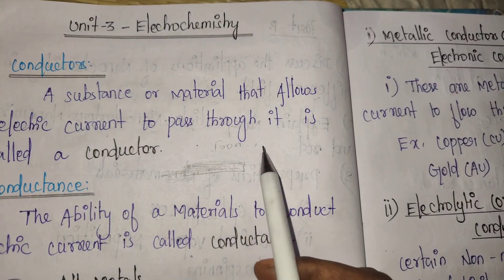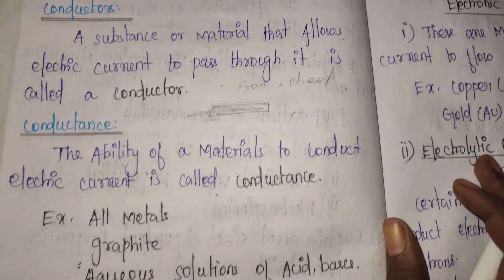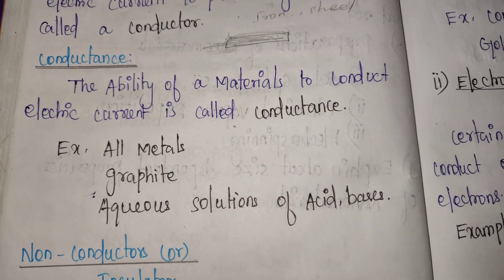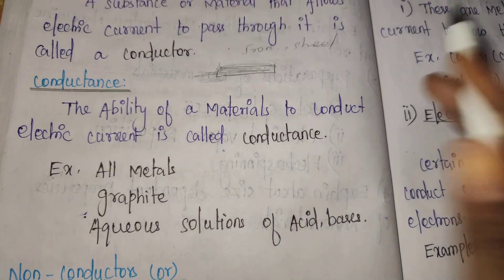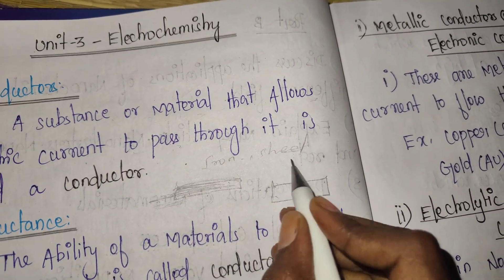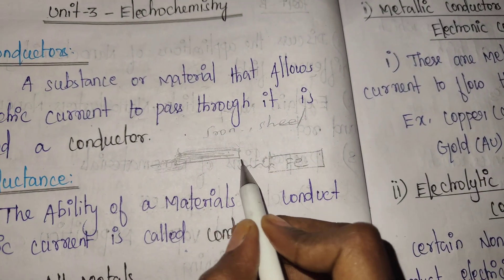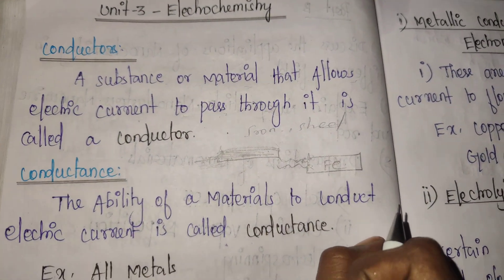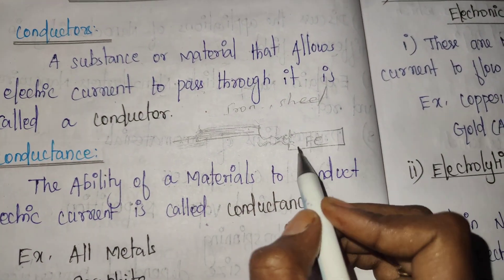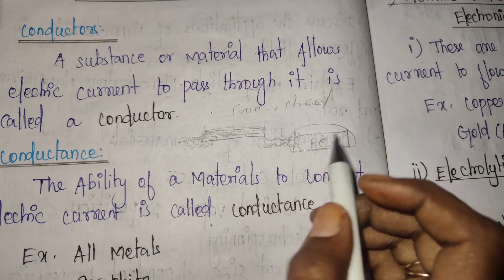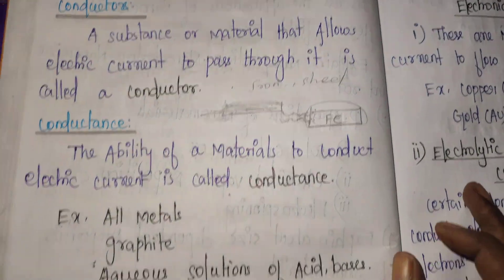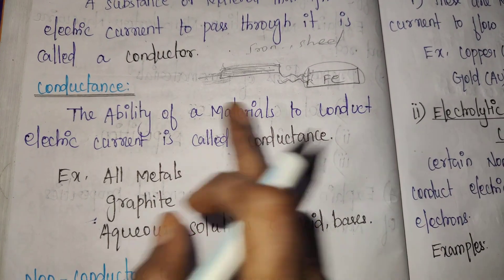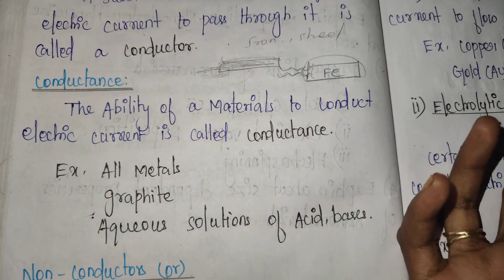For example: iron, steel, copper. Conductance — the ability of a material to conduct electric current is called conductance. In any material, electric current flow is called conductance.